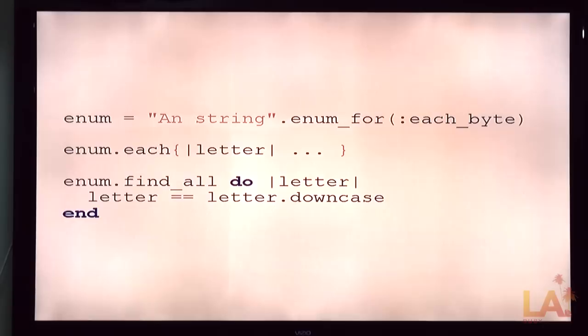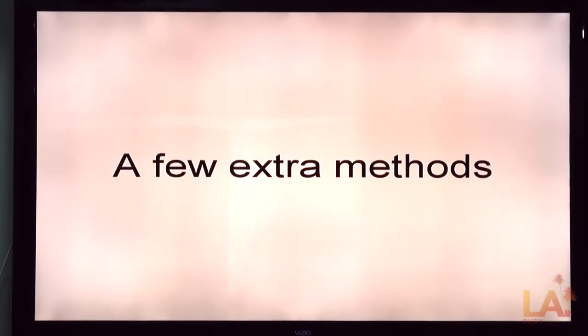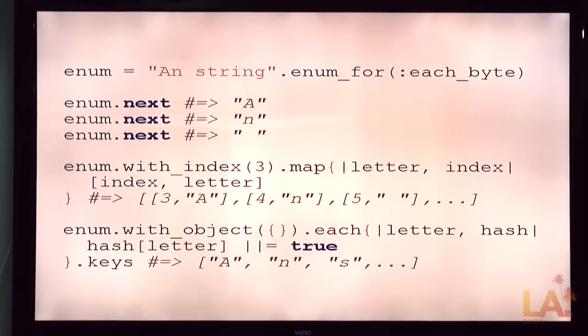So any time you've got an enum, you can pass it around and call each, map, find, all those things on it. So this means you can call find all on anything that is enumerable. So you could say 10 up to 100, find the ones that are multibyte as a byte, or something like that. You also get some extra methods out of the enumerable, next being the most interesting one.